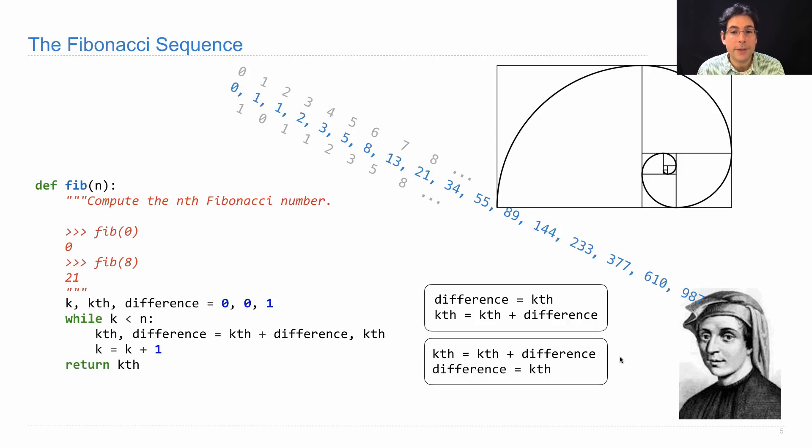A useful exercise to think about for a moment is how would you achieve this result using this kind of implementation if you weren't allowed to assign two names to two values at once? What would you do? You could pause the video for a moment and think about it.